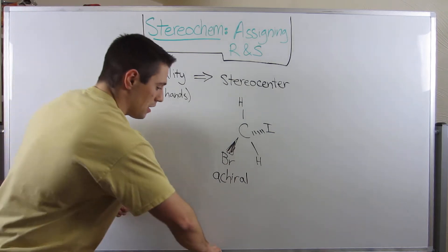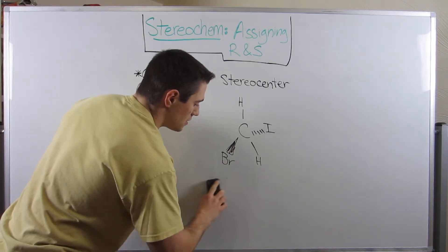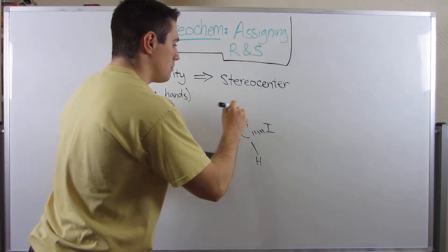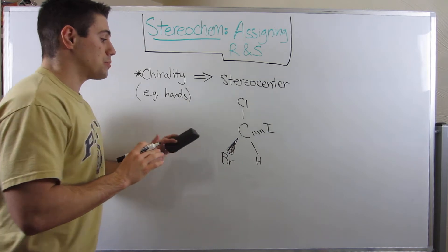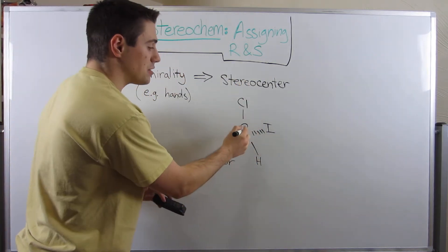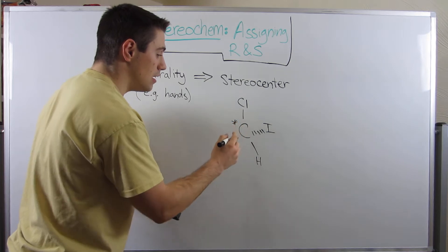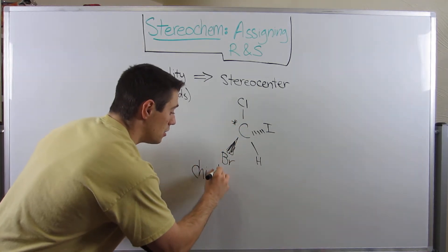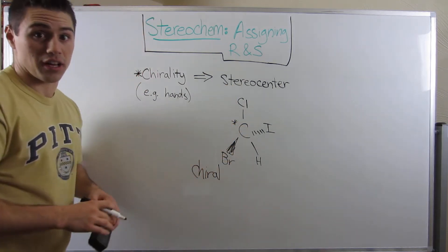On the other hand, let's just see if I erased that. Instead of an H right here, just for fun, let me just tack a chlorine on here. Just by switching that one thing, we now have four different atoms attached to this carbon right here. Now our carbon is, or now our molecule is chiral because now we have a stereocenter.